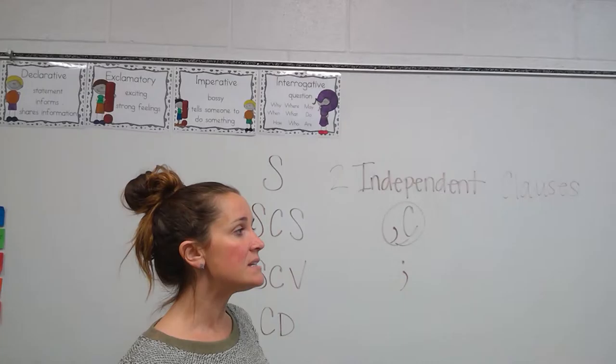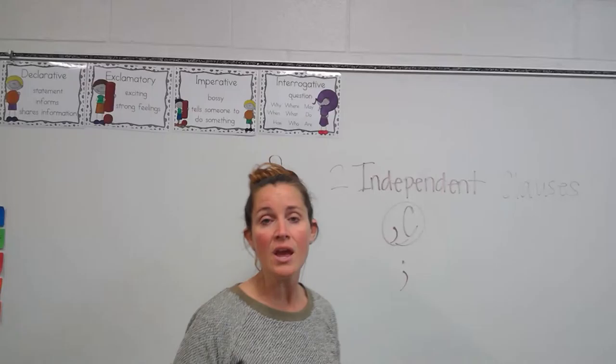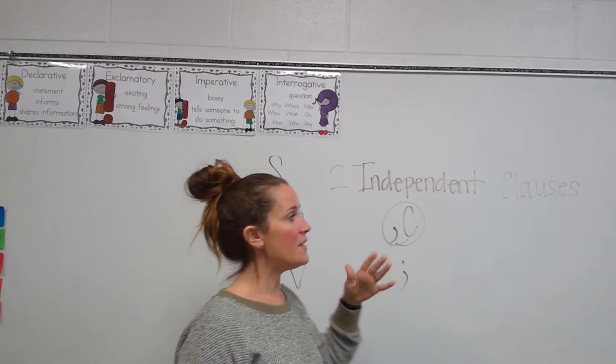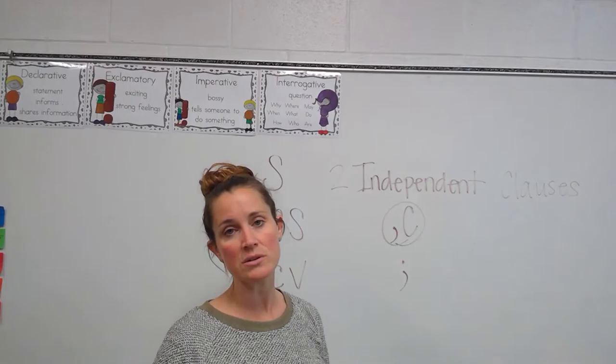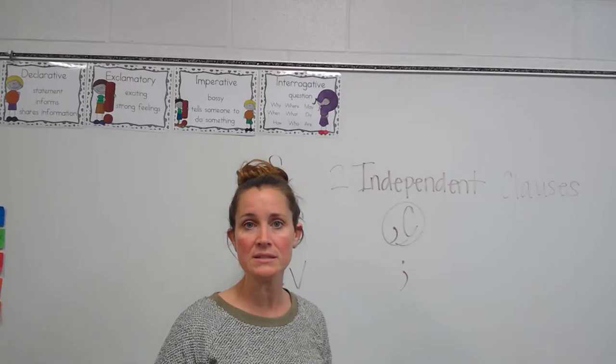Numbers two and three are compound sentences. For number four: 'Lily and Ben played the piano in the talent show.' Who played? Lily and Ben — a conjunction combining two subject nouns, so that's a simple sentence with a compound subject. For number five: 'I left my backpack in dad's truck yesterday.' There are no conjunctions, no commas or semicolons, so it's just a simple sentence.